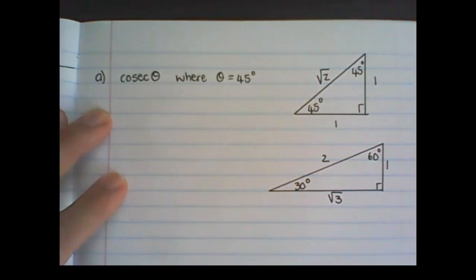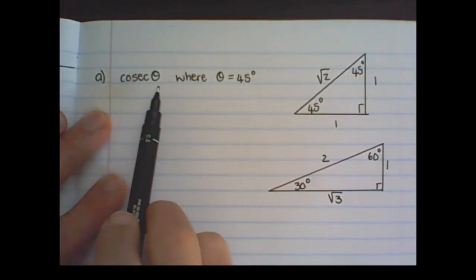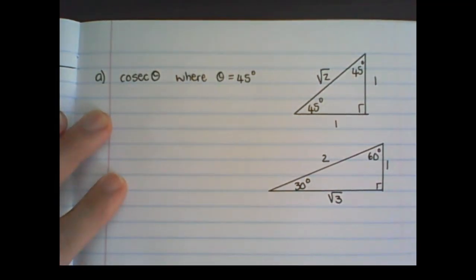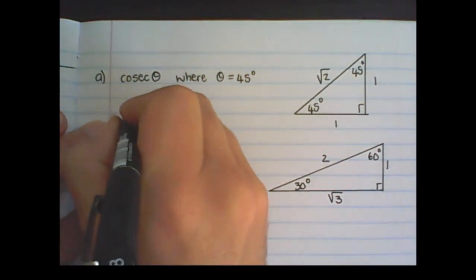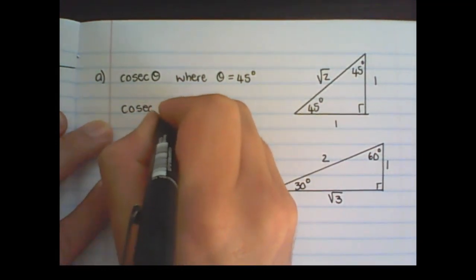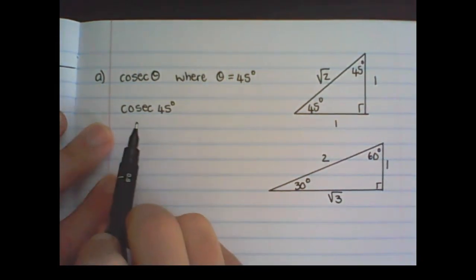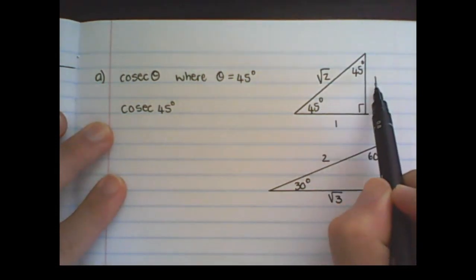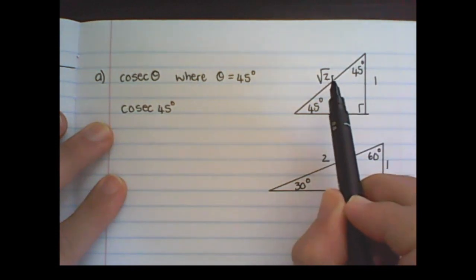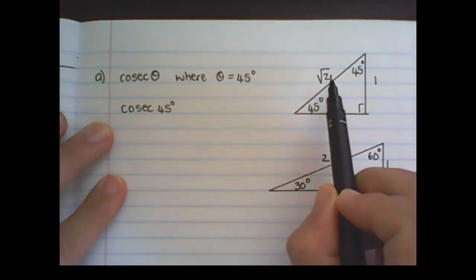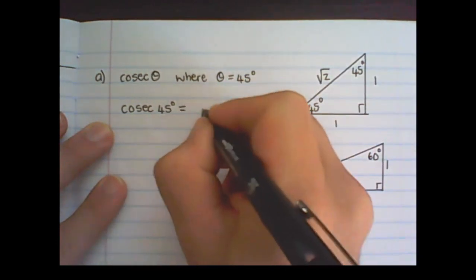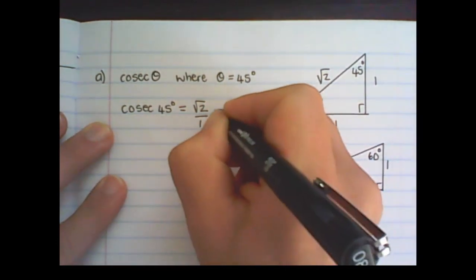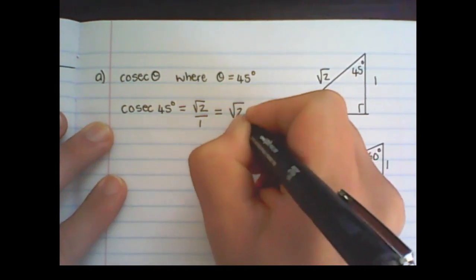Let's make use of the special triangles for some examples. Let's find the cosec of 45 degrees. Now remember cosec is the reciprocal function of sine. So sine would be opposite over hypotenuse, and therefore cosec is hypotenuse over opposite. So it is the square root of 2 over 1, and that becomes just the square root of 2.